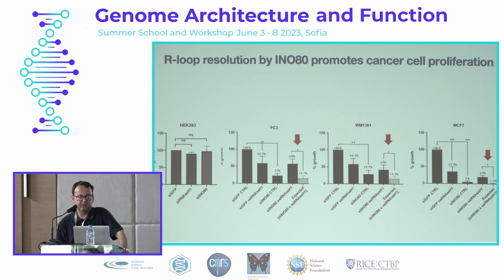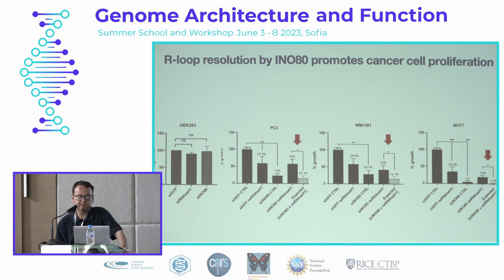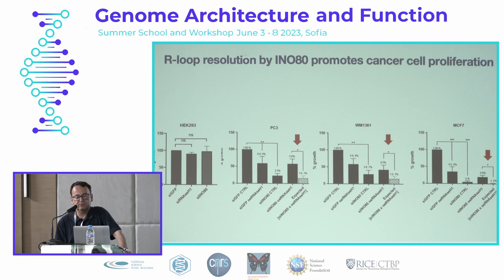Next we tested whether R-loop resolution by INO80 is important for cancer cell proliferation. This was done by comparing the effect of RNase H1 overexpression and silencing of INO80. While we did not observe effects in HEK embryonic kidney cells, in cancer cell lines we observed that both treatments — RNase H1 overexpression and silencing of INO80 — led to a decrease in cell growth. However, when combined, RNase H1 overexpression increased growth rates in cells silenced for INO80, and this was several-fold higher than expected if the two factors were unrelated, suggesting that resolution of R-loops by INO80 is necessary for cancer cell proliferation.